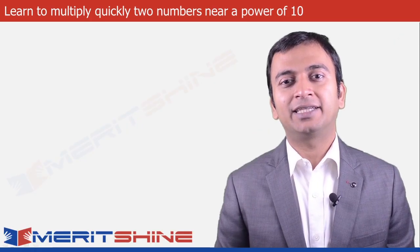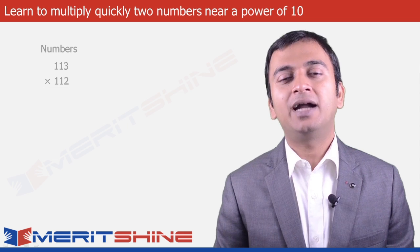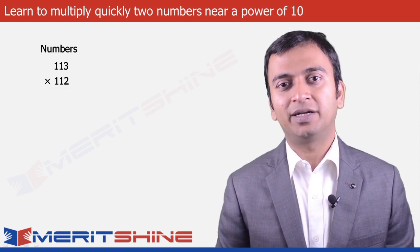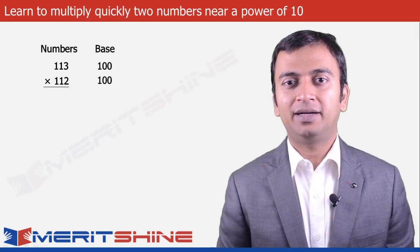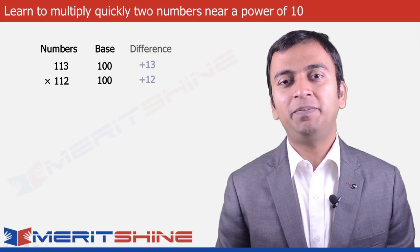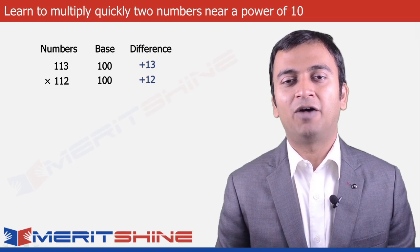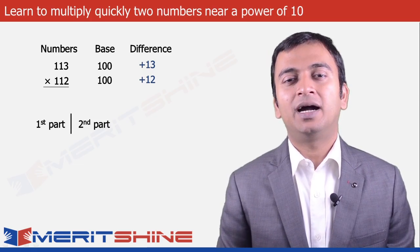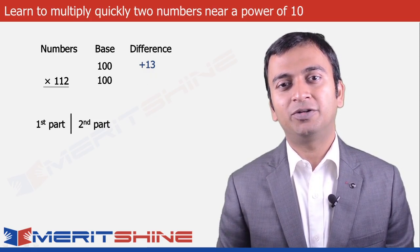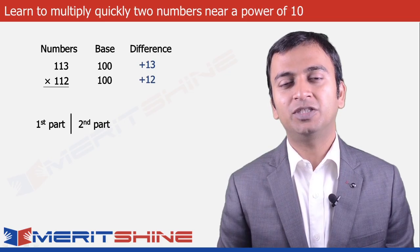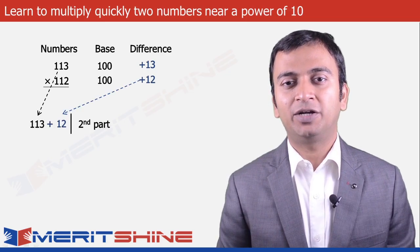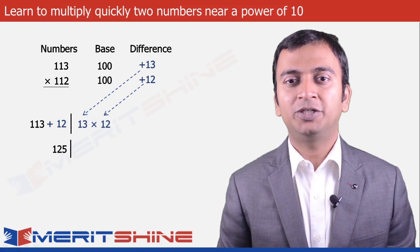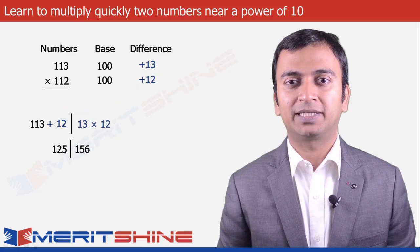Let us now take an example with bigger numbers: 113 into 112. Again both these numbers are close to 100. So our chosen base will be 100 and the differences would be plus 13 and plus 12. We can proceed to write down our answer in two parts. 113, the first number, added to the difference from the second, which was plus 12, gives us 125.